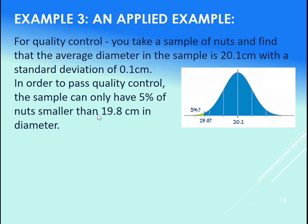Well, when you are doing quality control, you assume that there's going to be a certain acceptable amount of defective product. So in this case, the defective product would be any nuts that are smaller than 19.8 centimeters, and we're putting that percentage of defective product at 5%.